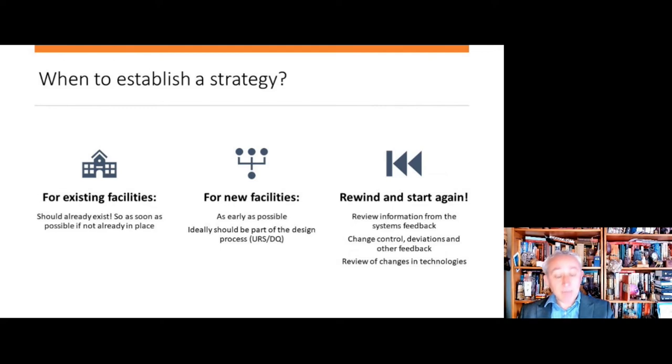As to when to establish a strategy, for existing facilities, given that the latest draft of Annex 1 was issued in December 2020, ideally something now already exists. It may be a work in progress, but the work has ideally started. For new facilities, it's best to start as early as possible, trying to bring in the contamination control aspects as part of the design process. And again, to re-emphasize, ensure that the document is continuously updated, drawing on things like change controls, deviations, and other forms of feedback, and also any changes to technology or new products introduced into a facility.